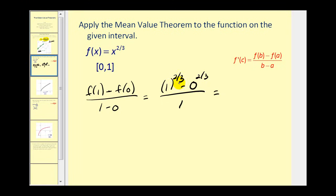One to the two-thirds is going to be one minus zero, all divided by one — that's one. So now we need to find the x value where the slope of the tangent line would also be one. So we'll find the derivative of the function, set it equal to one, and solve for x.